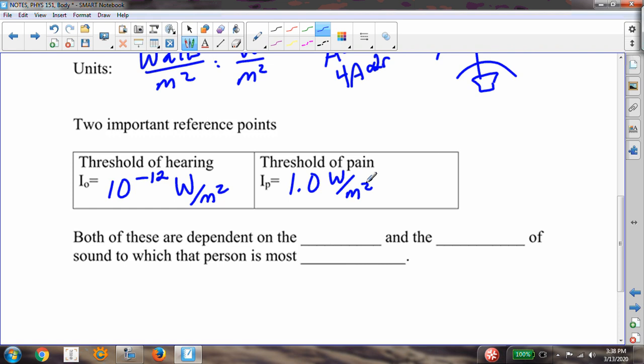The first thing I want you to recognize is that we are 12 orders of magnitude in the sounds that you can hear between the threshold of hearing and the threshold of pain. That is remarkable that the human ear can hear over so many levels of intensity.